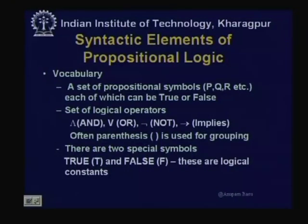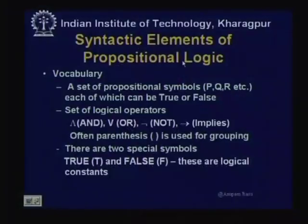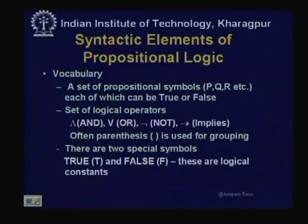Let us look at the syntactic elements of propositional logic. Any language will have some vocabulary — for English we have vowels, consonants, and numbers. Similarly, for propositional logic the vocabulary is a set of propositional symbols. Whether 'Anil is intelligent,' 'Anil is hardworking,' 'Gita is beautiful,' or 'Sita is smart' — all these propositions can be symbolically represented as p, q, r, etc. These are the set of propositional symbols, and each of them can be true or false.